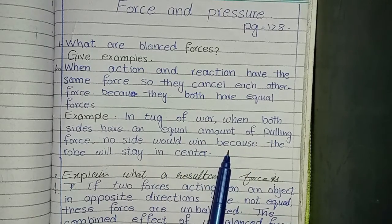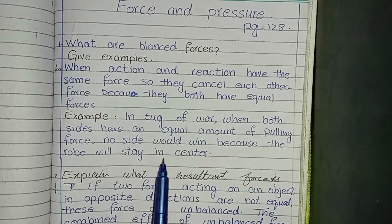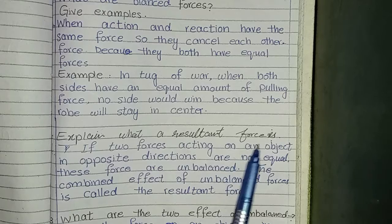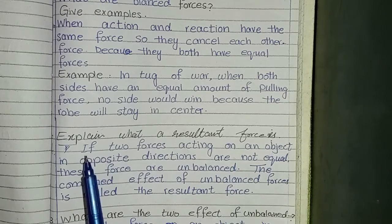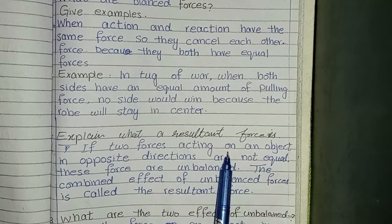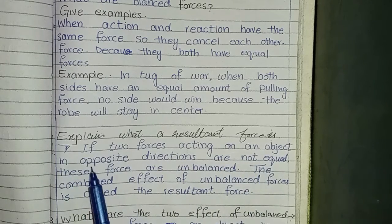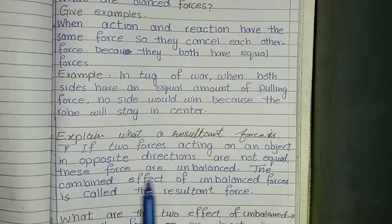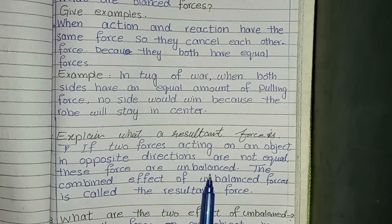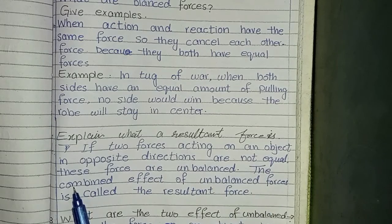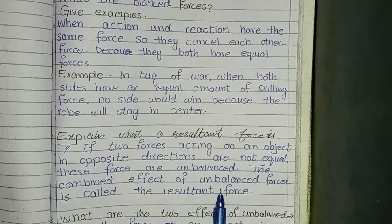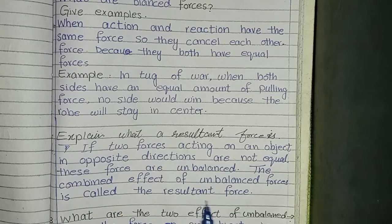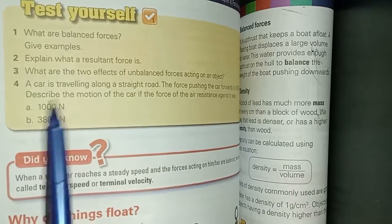Because the rope will stay in the center. Second question: Explain what a resultant force is. If two forces acting on an object in opposite directions are not equal, these forces are unbalanced. The combined effect of unbalanced forces is called the resultant force.